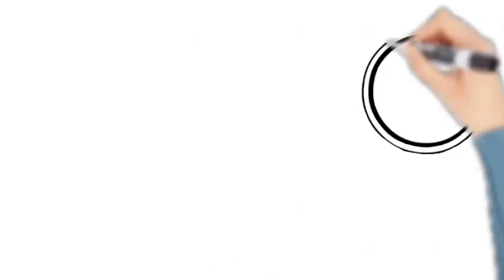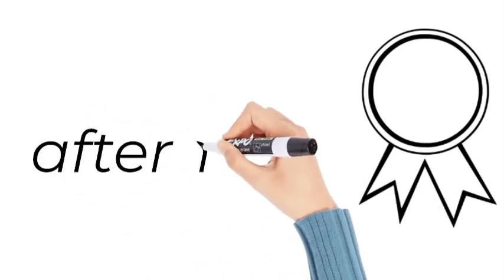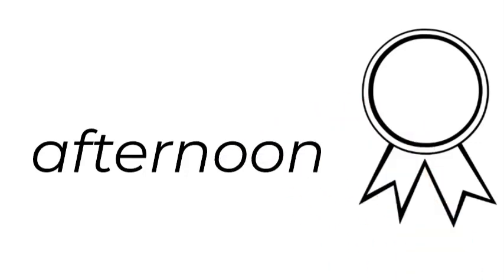How do we spell afternoon? A-F-T-E-R-N-O-O-N. A-F-T-E-R-N-O-O-N.